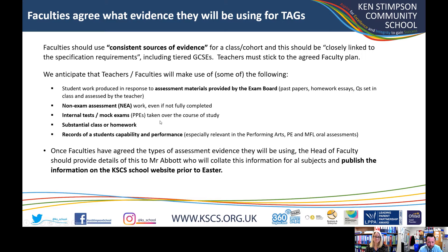You'll see this on the document when you get to read it later today — we'll also send it out via email to your parents. The types of evidence include: assessments provided by the exam board, which may be PPEs; non-examination assessments, also known as coursework, which doesn't have to be entirely completed this year; substantial class or homework — not five multiple choice questions, but a substantial essay-style question; and in practical subjects such as performing arts, PE, MFL oral assessments, and food technology, they'll be looking at your performance in practical activities and speaking assessments.